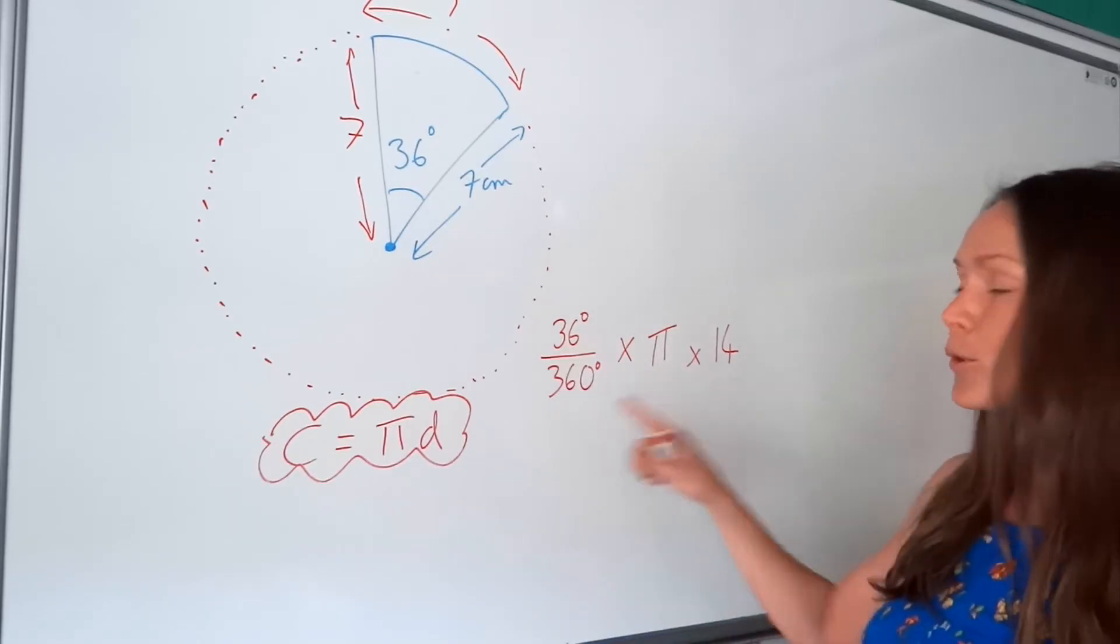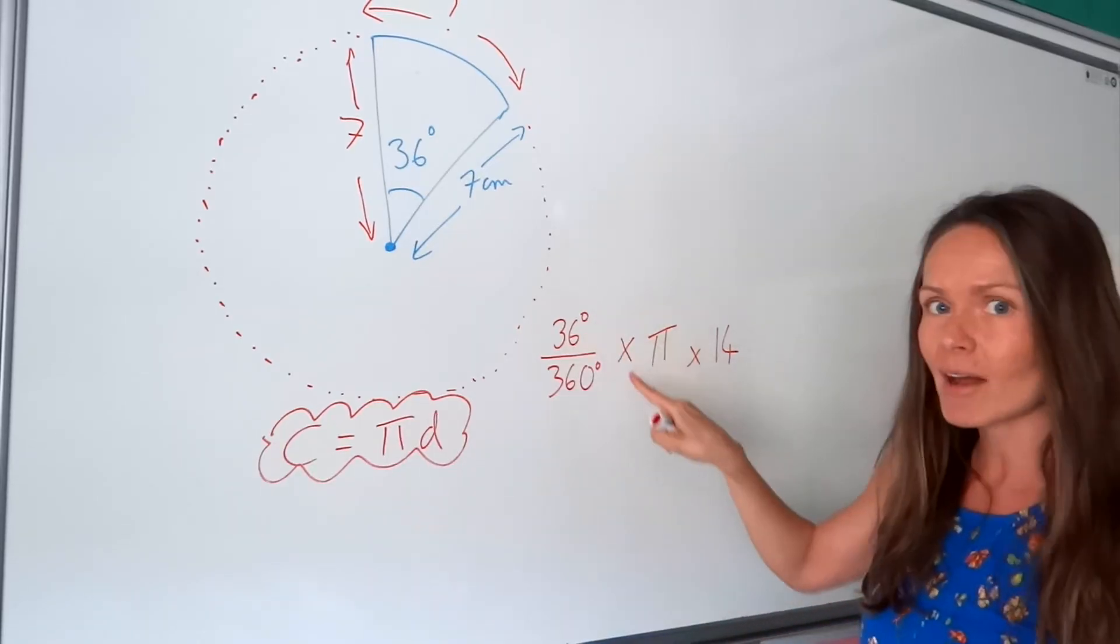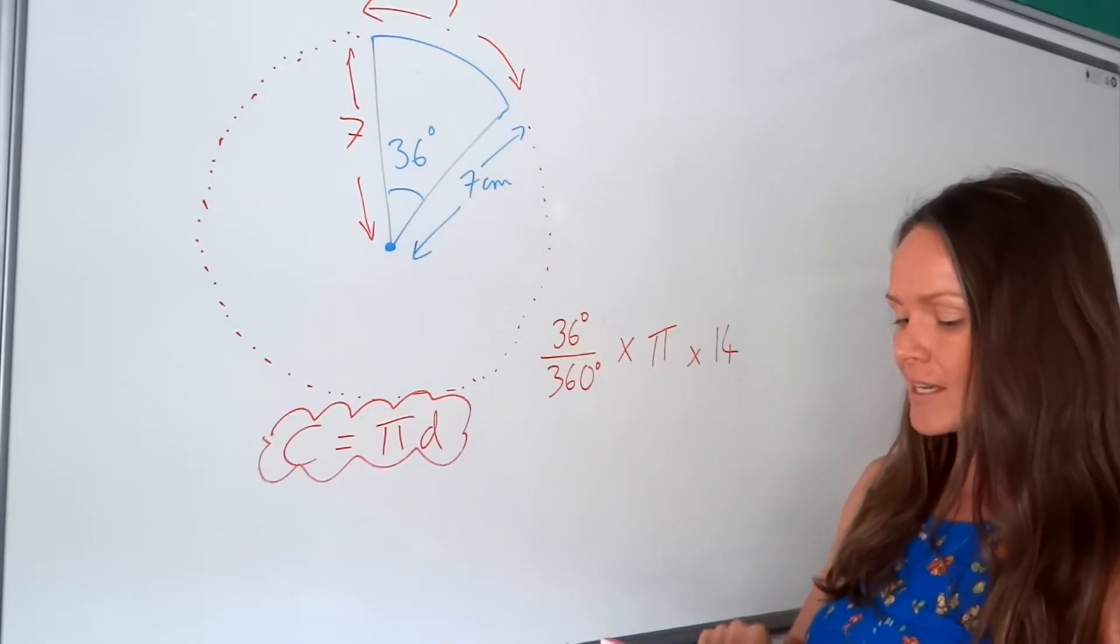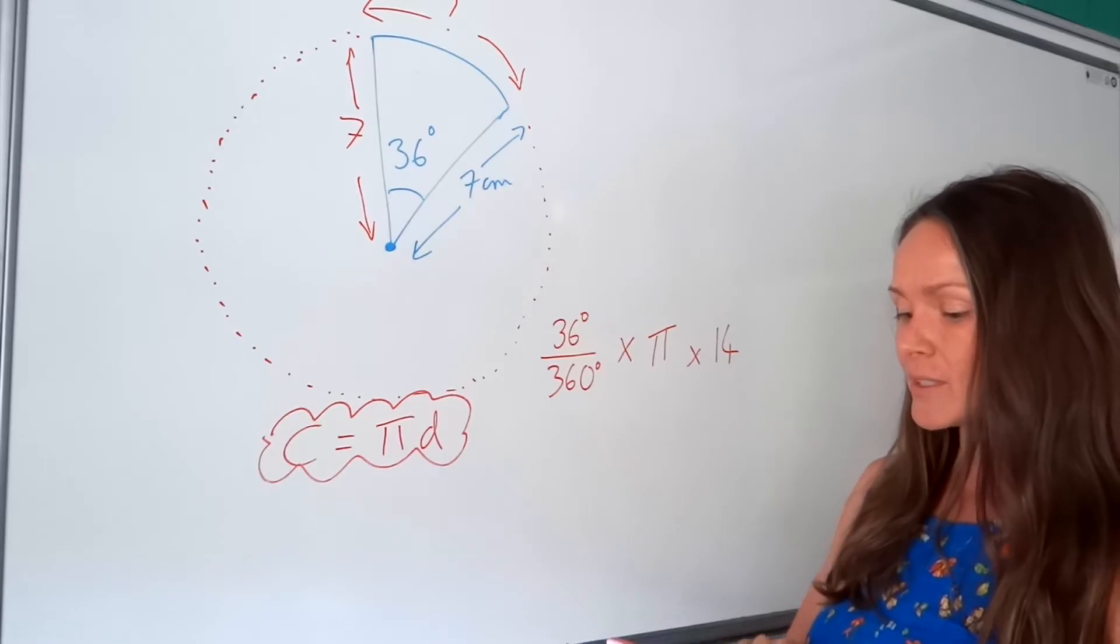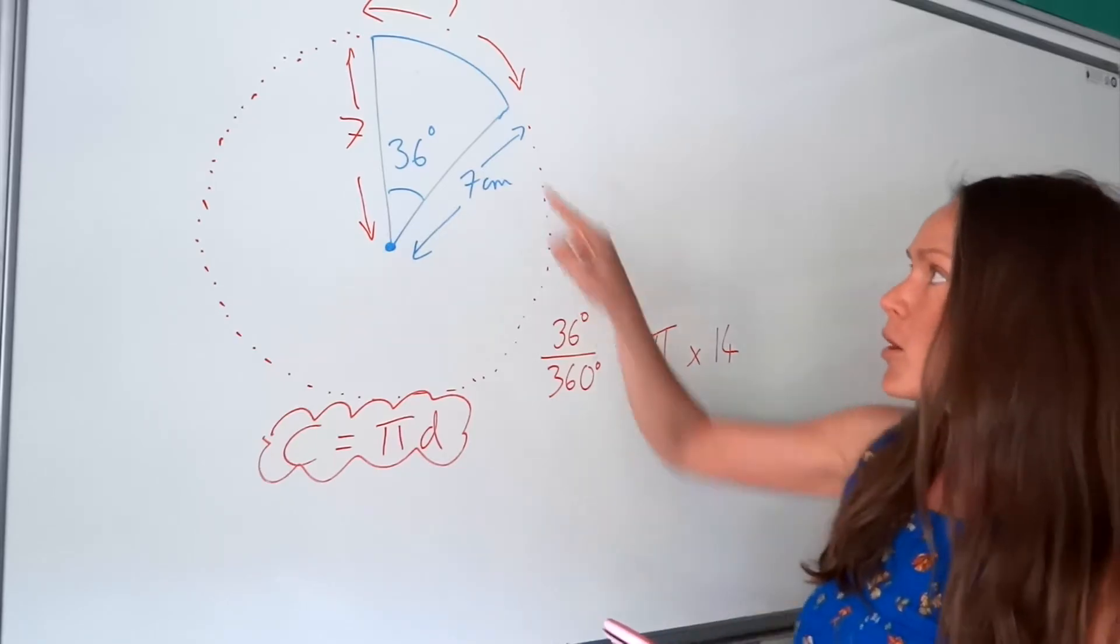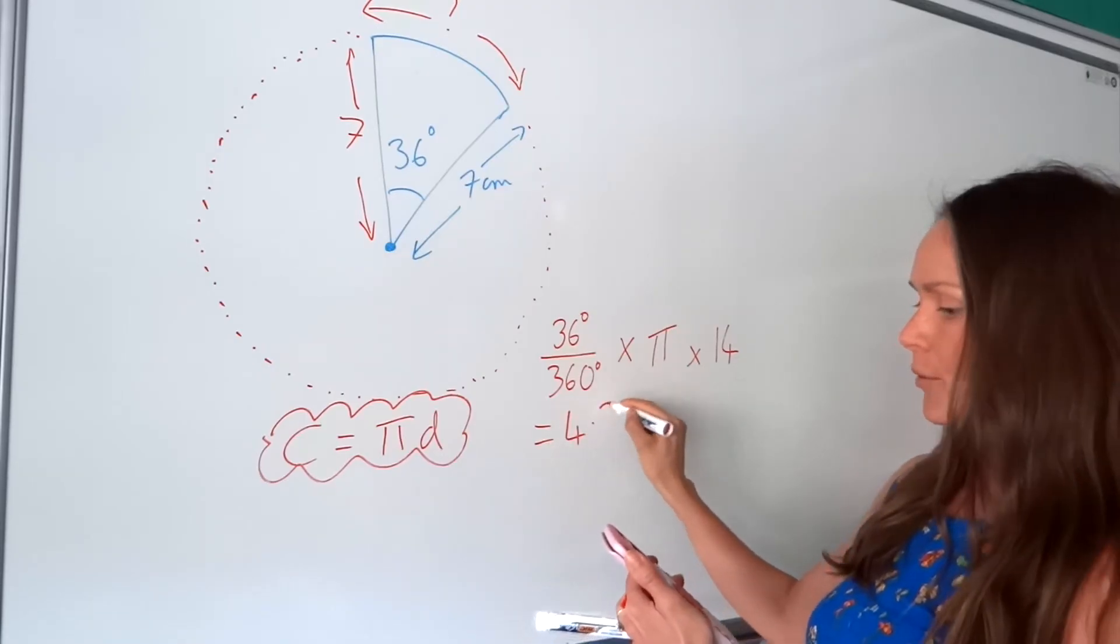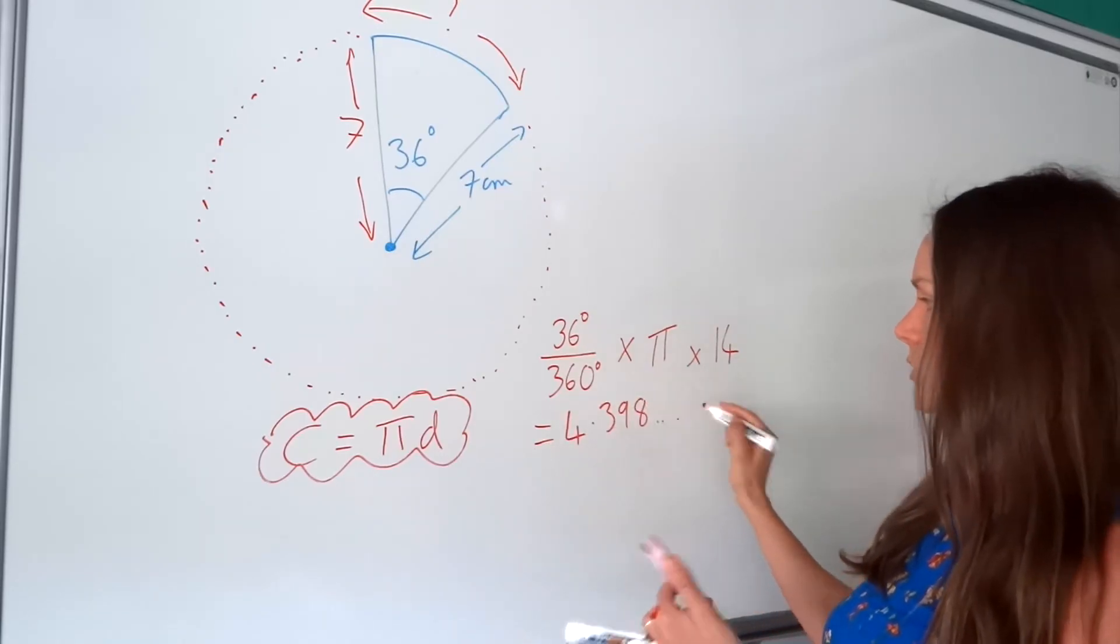Now, put that in your calculator. Don't worry about the degrees. You don't need to put that in the calculator. So 36 over 360 times pi times 14. And that will give you the curved part just there. So that gives me 4.398 dot dot dot dot.